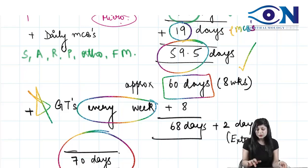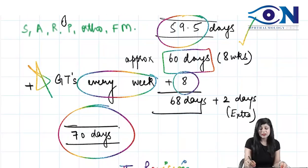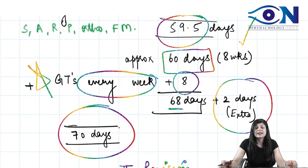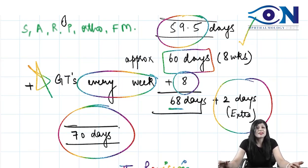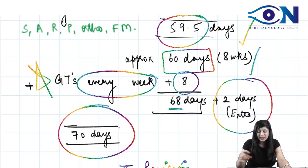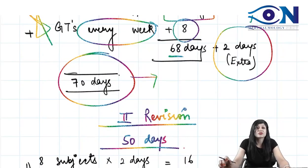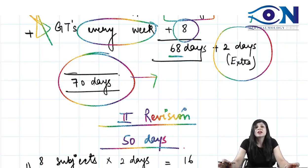Eight GT days are added, bringing the total to 68 days, plus two extra buffer days for days when you are not feeling well or not up to studying. That makes your first revision a total of 70 days. Plans are only good if they are doable, and this is a very doable plan.